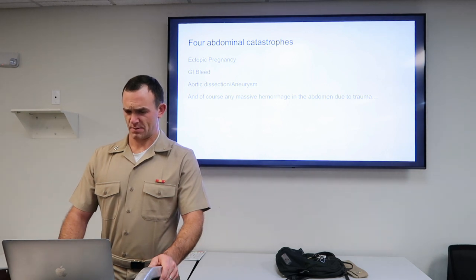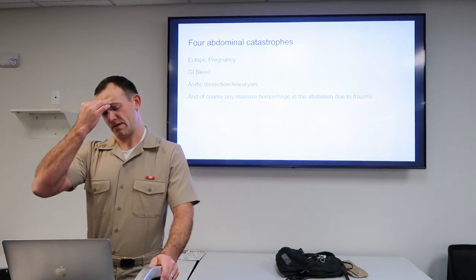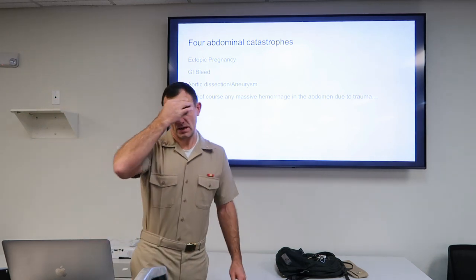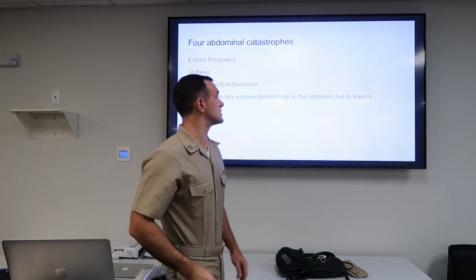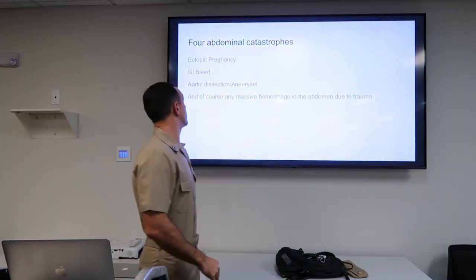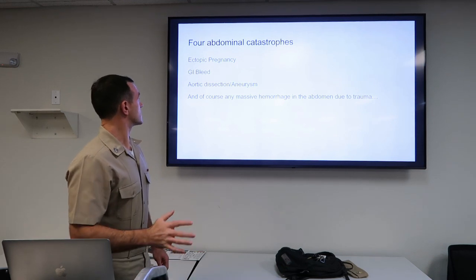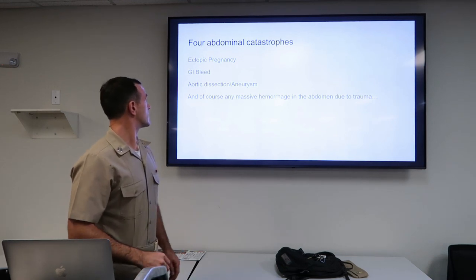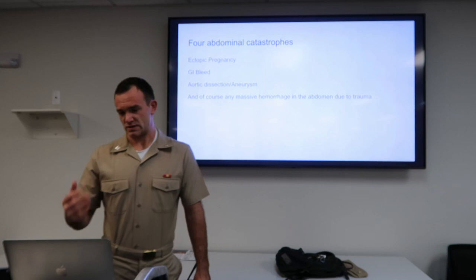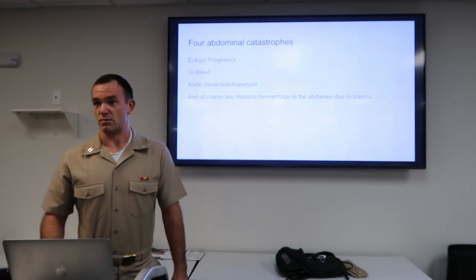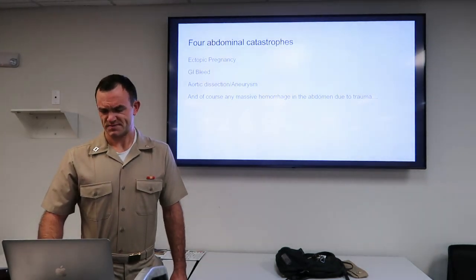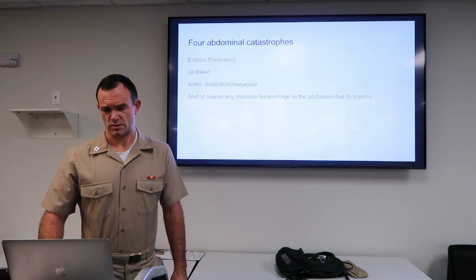I've listed a couple of catastrophes. These can be really bad and kill people really fast — I've seen them a couple of times. I haven't seen anybody die from ectopic yet, thank goodness. But GI bleeds are definitely something — I'm sure you guys have seen some bad ones. And then aortic dissection and aneurysm — those people can be really sick.